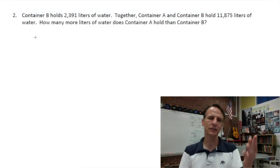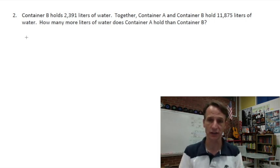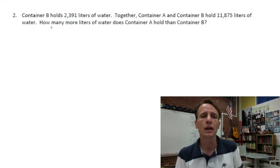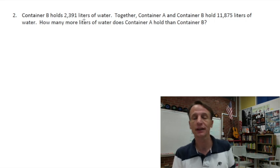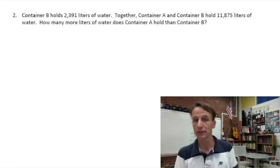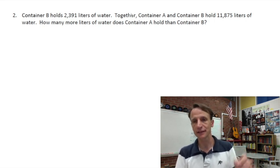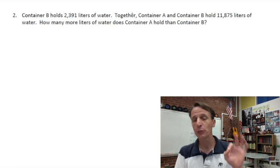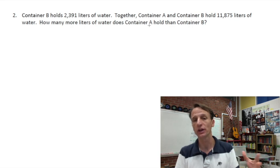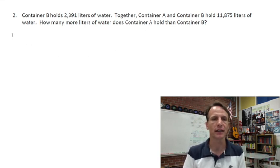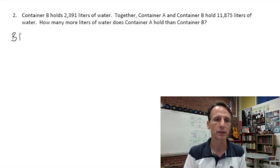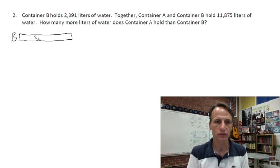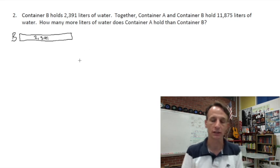Let's keep rolling. All right, number two. I love number two here, this is great. A little unimaginative with containers A and B, but it helps to keep things straight. Let's read it. Container B holds 2,391 liters of water. Together, container A and container B hold 11,875 liters of water.